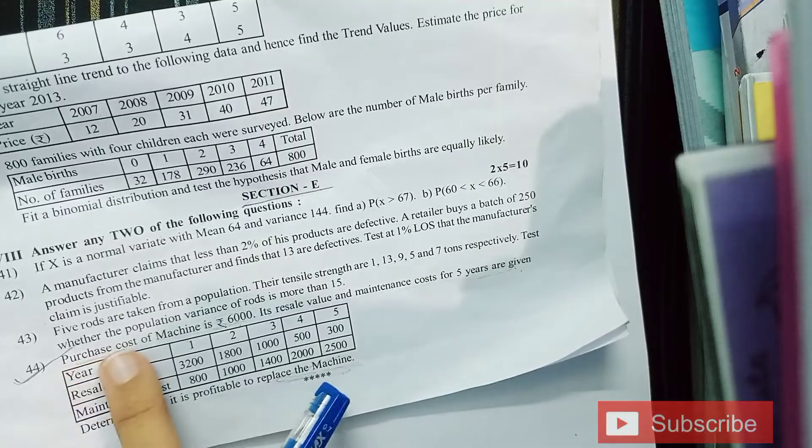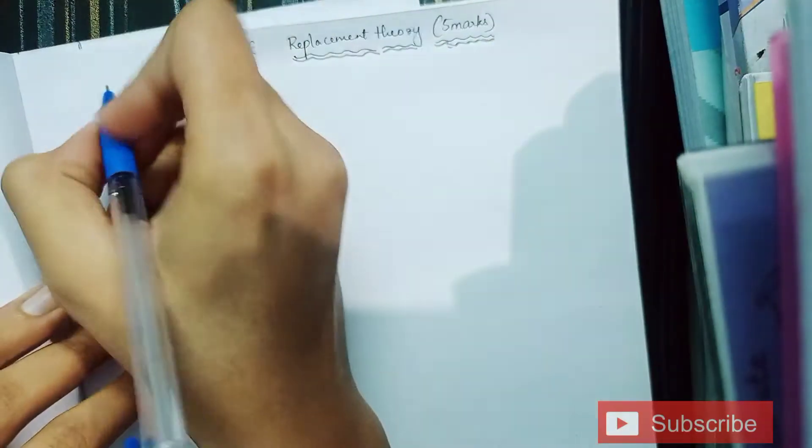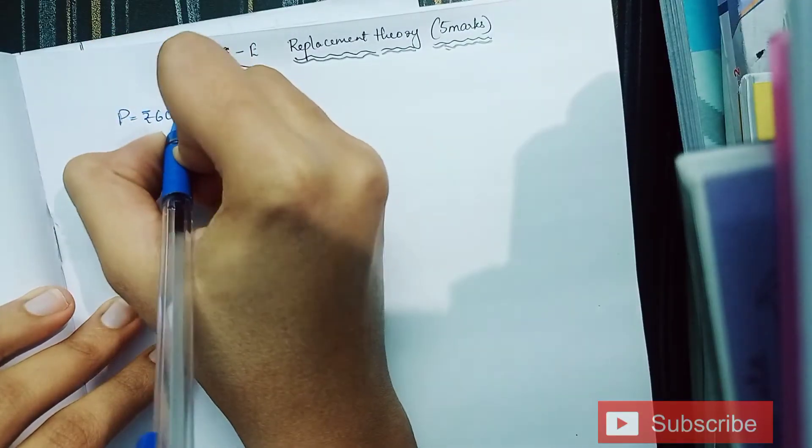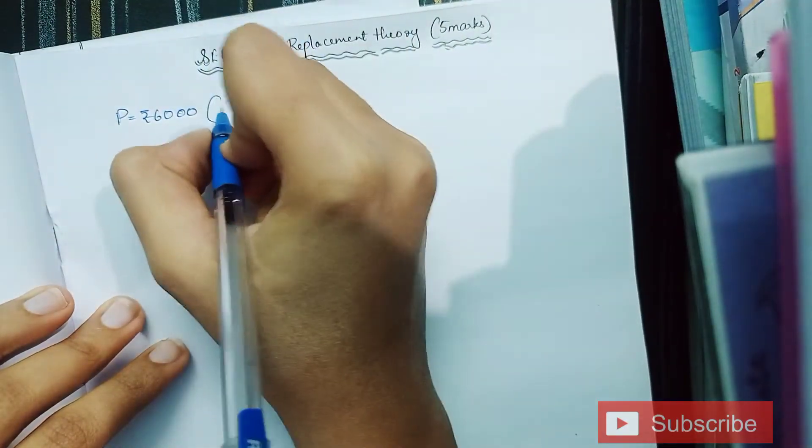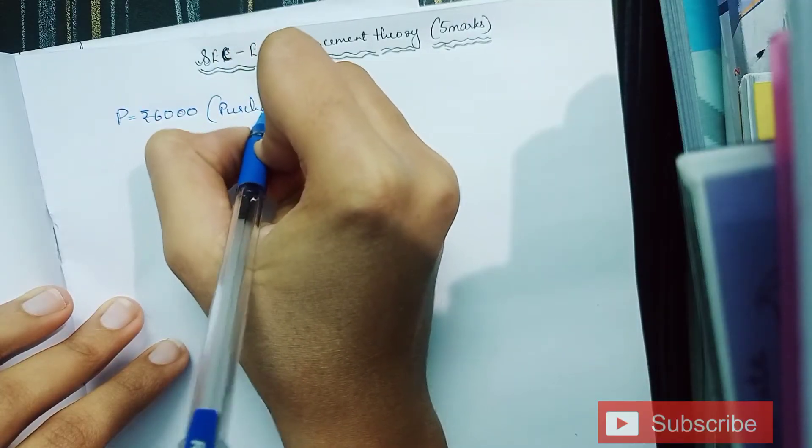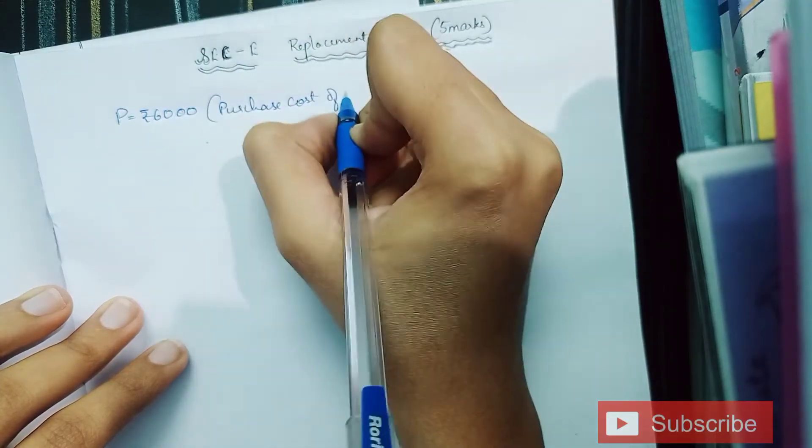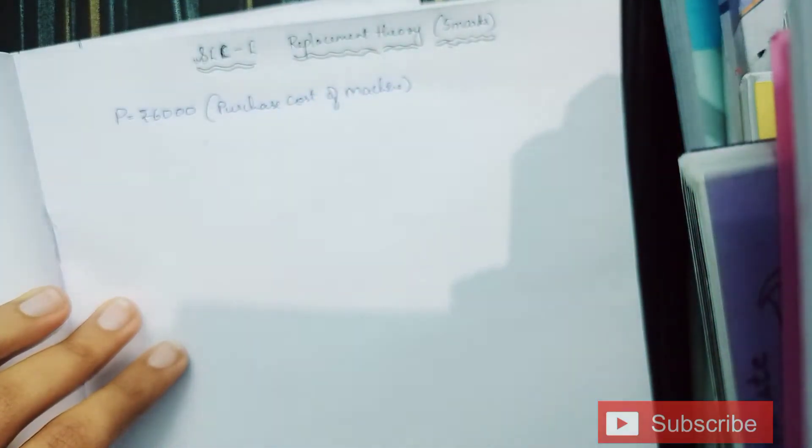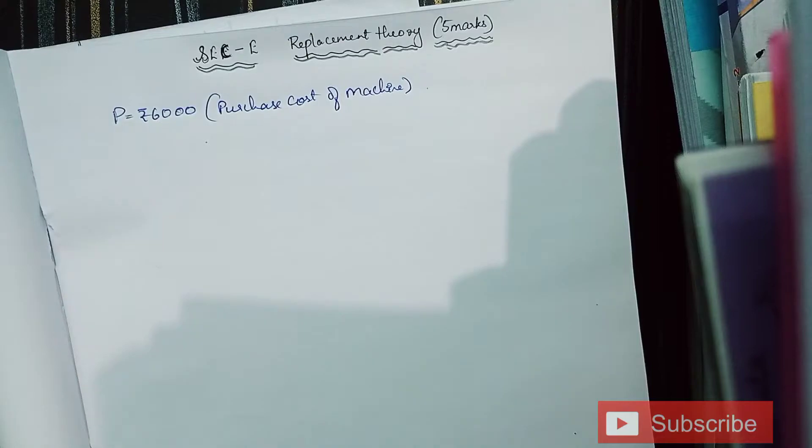Determine when it is profitable to replace the machine. Firstly, we must write down the purchase cost of the machine which is Rs. 6000, denoted as P, and in bracket mention it as purchase cost of machine.